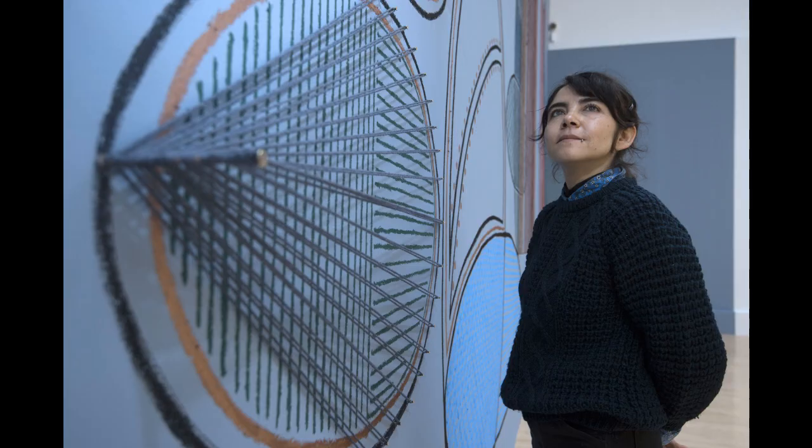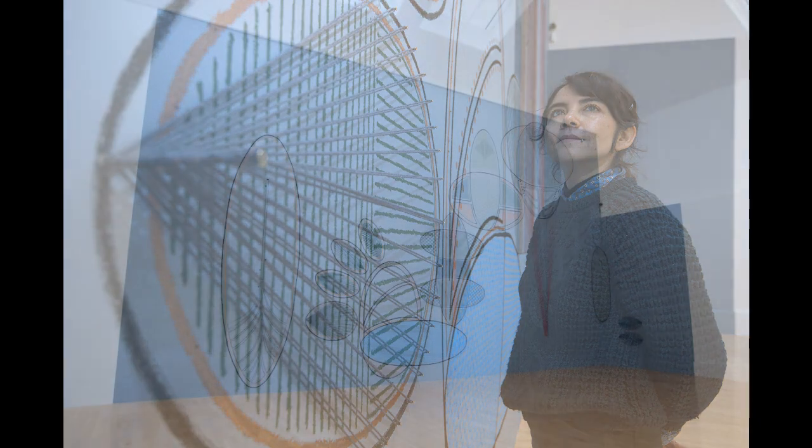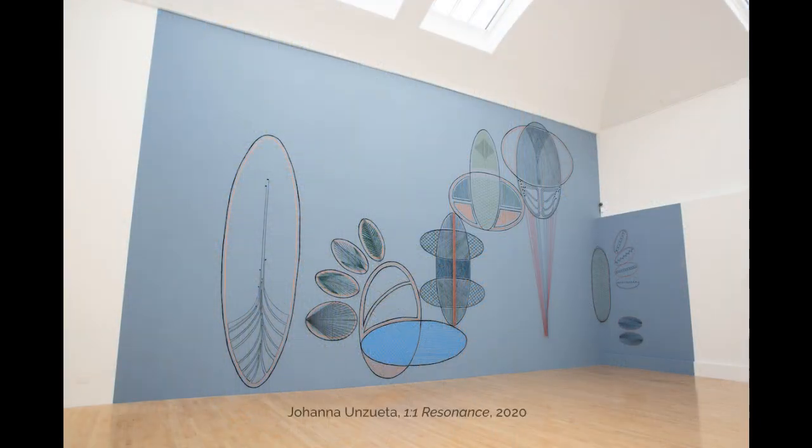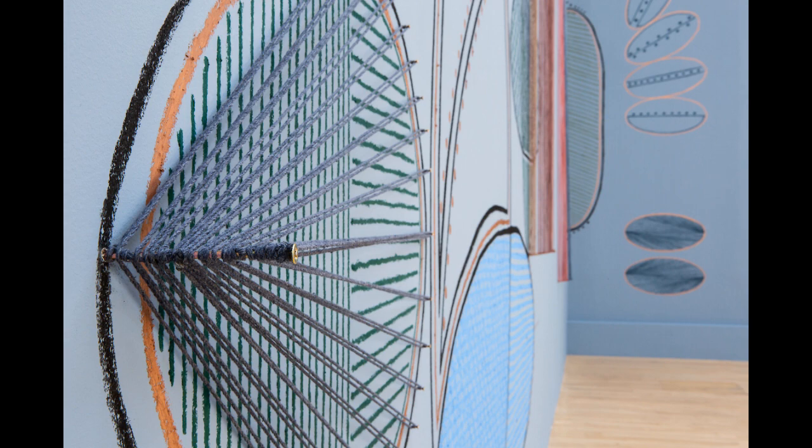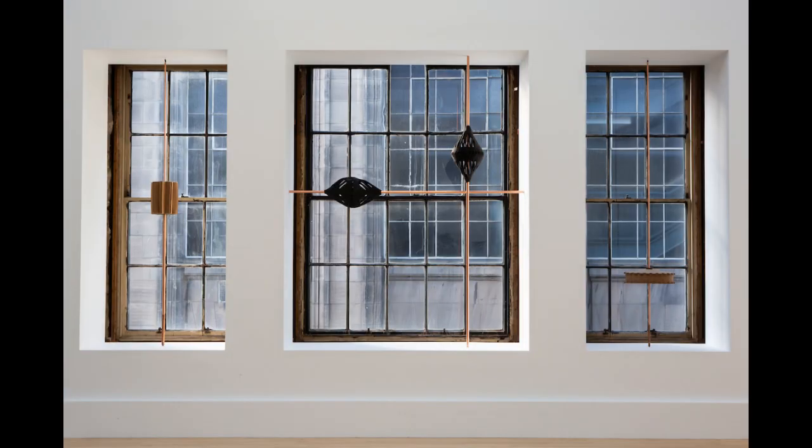This week we're going to look at the work of Johanna Unzueta. Johanna has created a large site-specific wall mural for the exhibition called One to One Resonance and we're also showing a series of her felt sculptures Lantern Wheel A, Gemalos Twins and Lantern Wheel B.